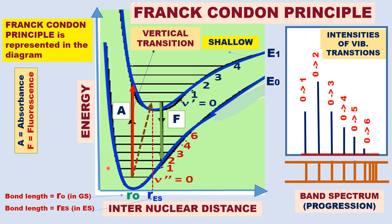A band spectrum is obtained, as in a vibrational spectrum with transitions 0→1, 0→2, 0→3, and so on. The lines are more crowded when the vibrational quantum number is large — from quantum number 0 to 6, the lines become crowded. This spectrum is called a band spectrum, also known as a progression in the vibrational-electronic spectrum.